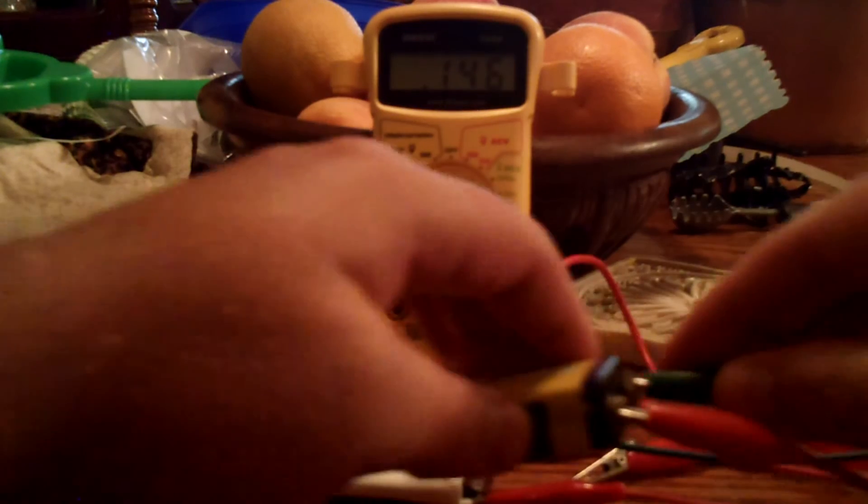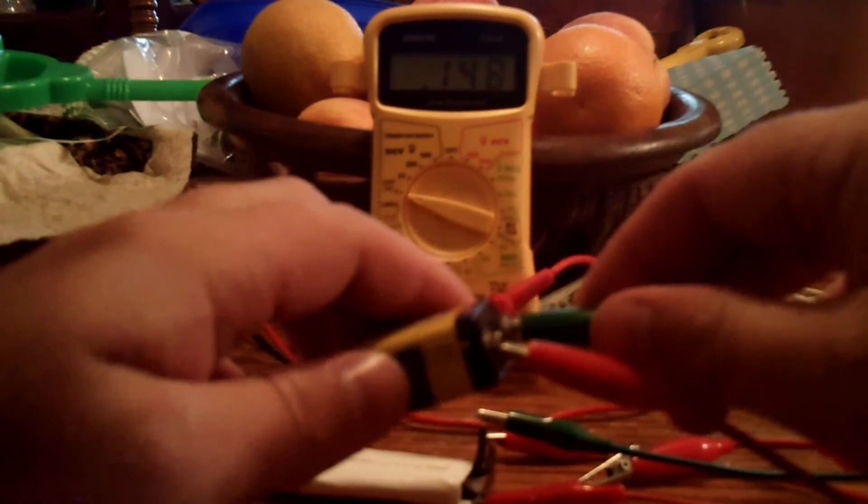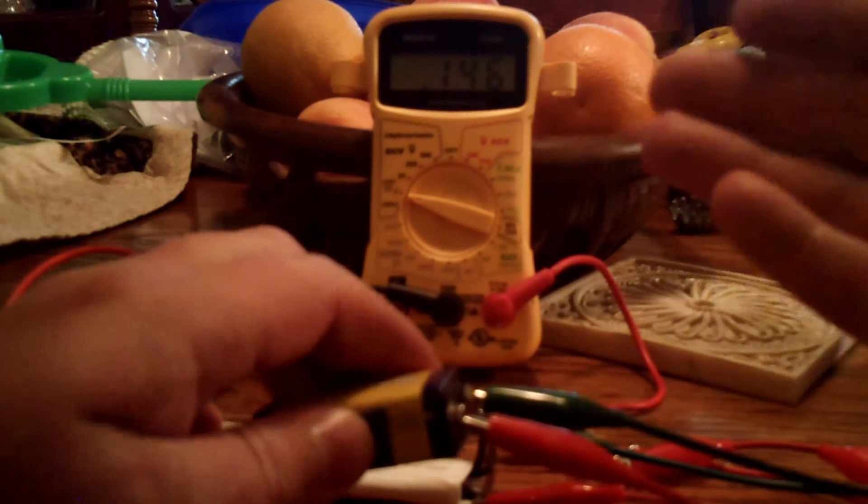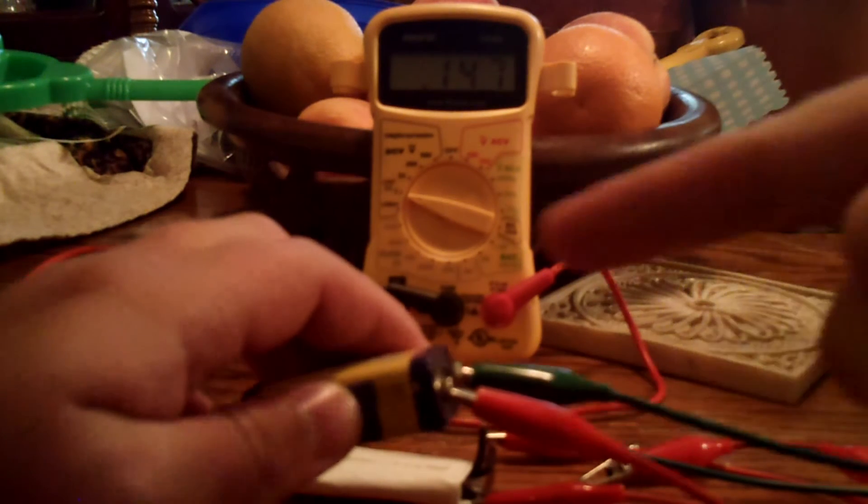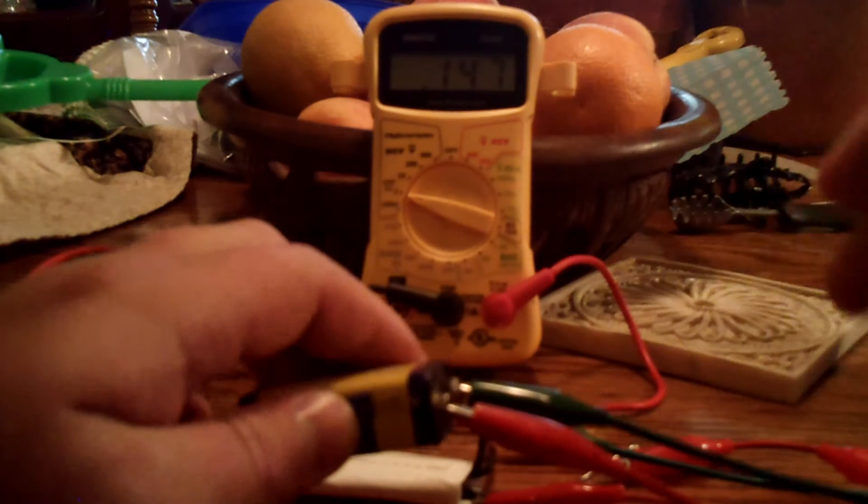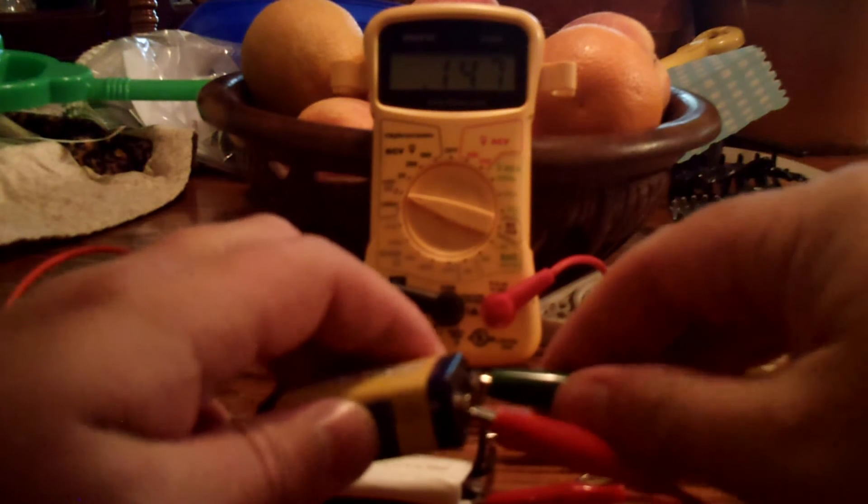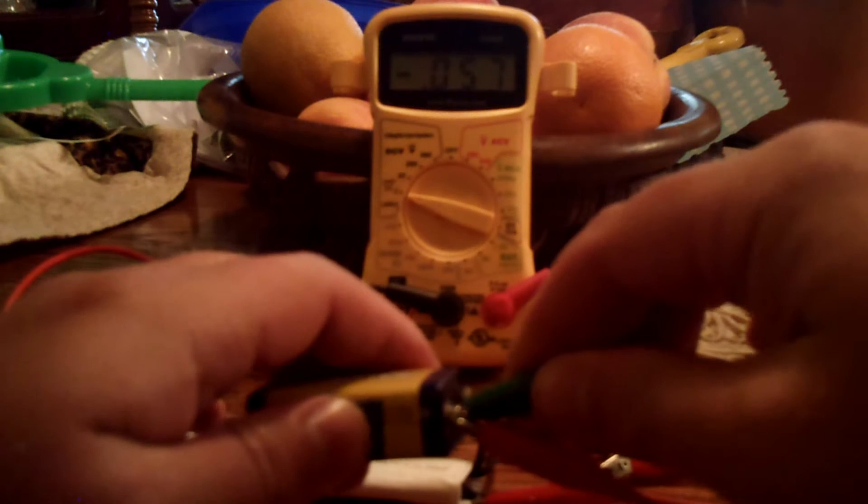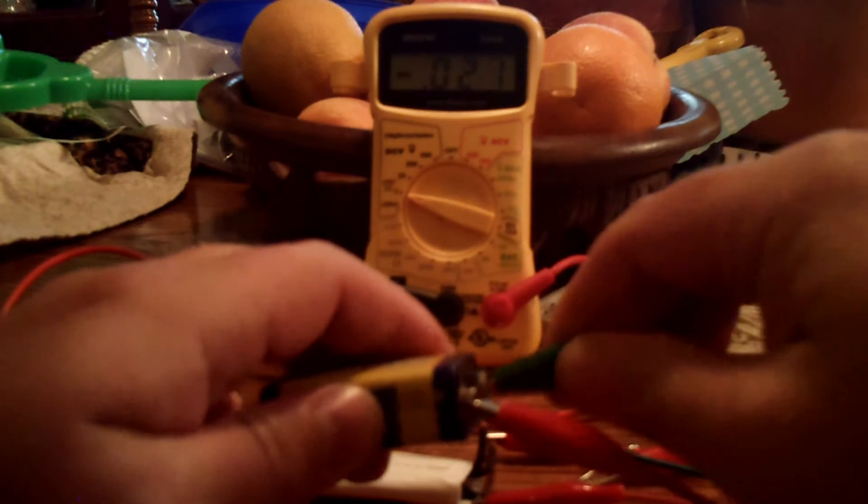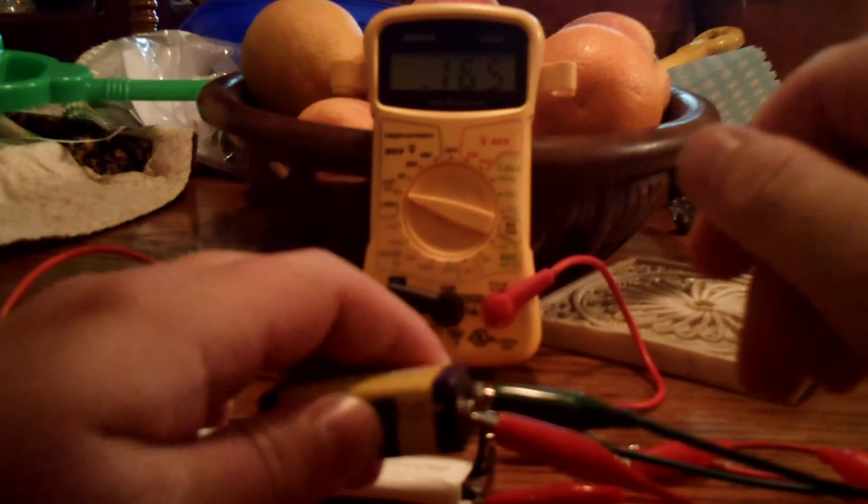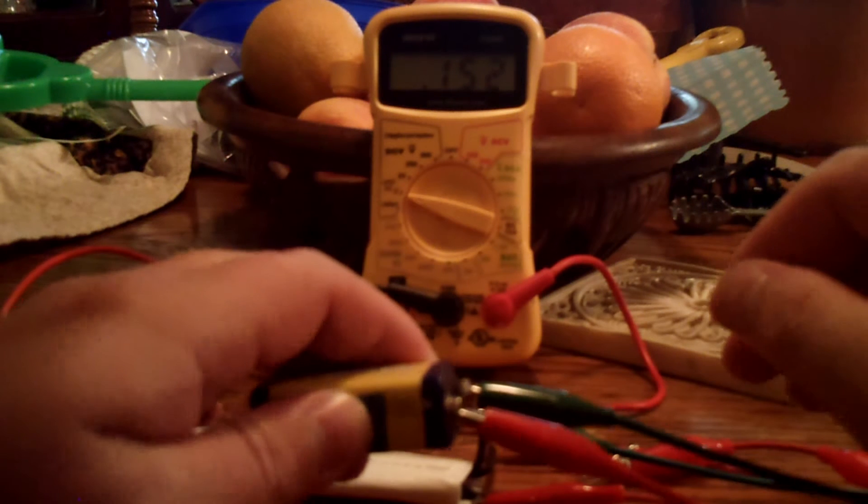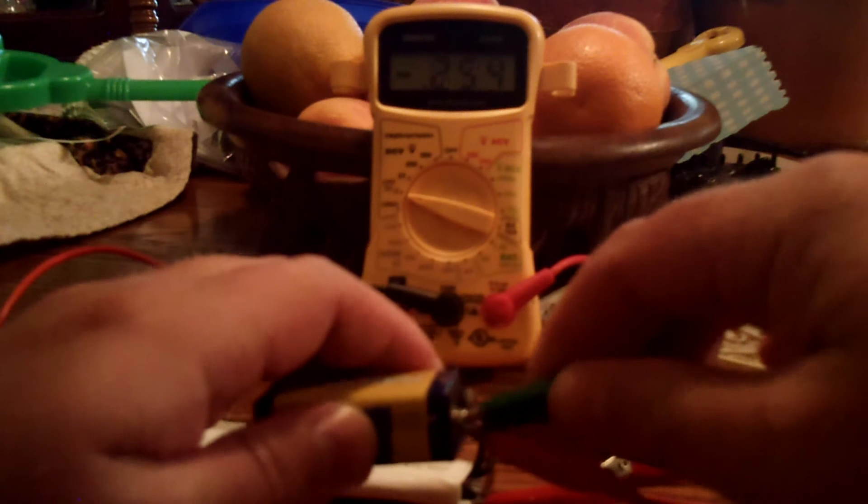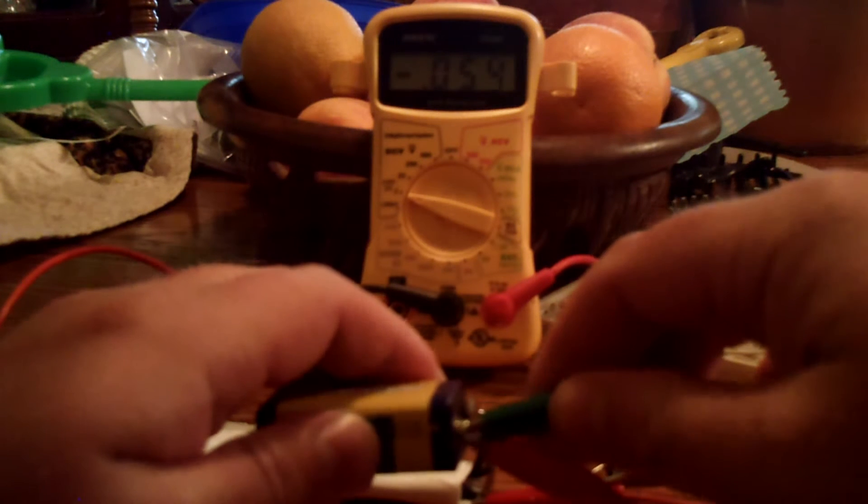And it will level itself out and hover around there for a few seconds. Actually it will pretty much stay around there. Now what I'm going to do is I'm going to take this battery and go short out these two leads going to the capacitor. So basically I'm going to short out these two plates. And watch what happens. It went negative. It swaps polarity. It's interesting to note that it goes negative.